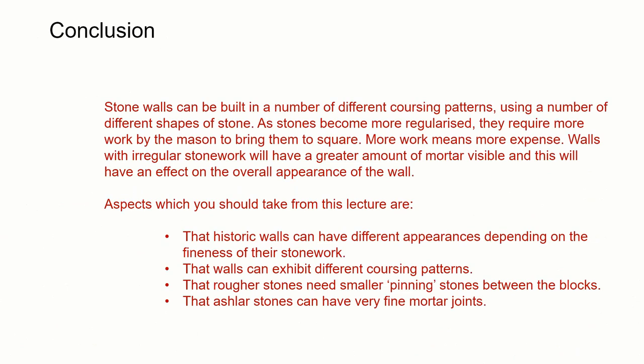In conclusion stone walls can be built in a number of different coursing patterns using a number of different shapes of stones. As these stones become more regular in size and shape they require more work by the mason to bring them to square. More work means more expense. Walls with irregular stonework will have a greater amount of mortar visible and this will have an effect on the overall appearance of the wall.